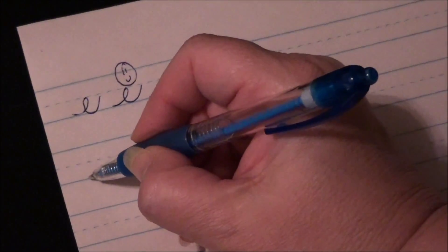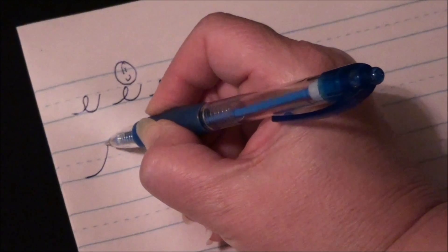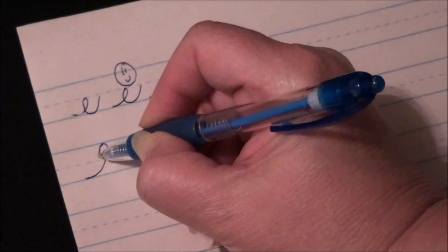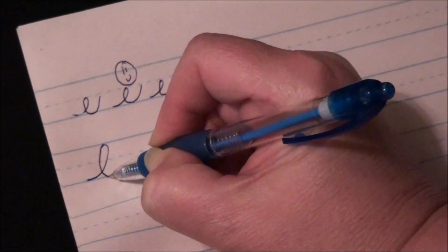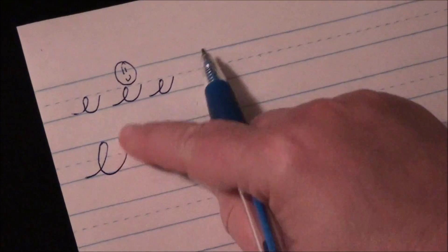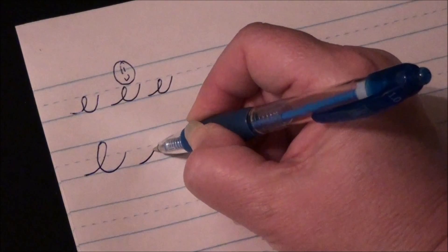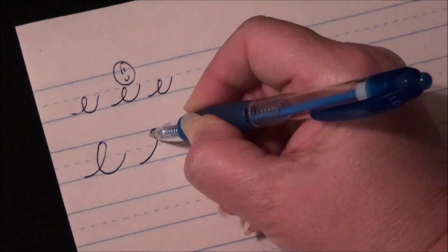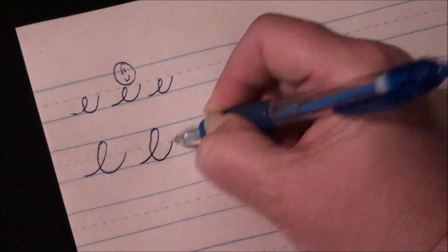Okay, so we're going to start at our baseline, and we're going to come up and loop all the way to the headline. Come down, don't cross over until you pass your midline. Touch your baseline, come up to your midline. So it looks exactly like the E only taller. Start at your baseline, loop up to your headline, come down past your midline, back up to your midline again.